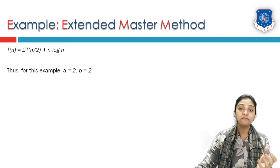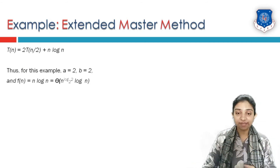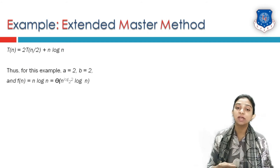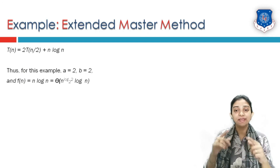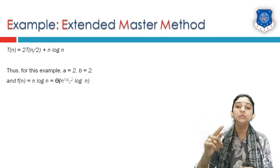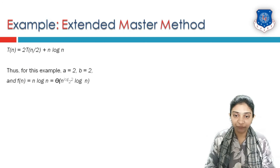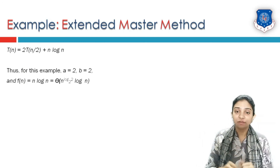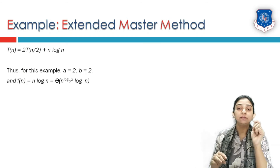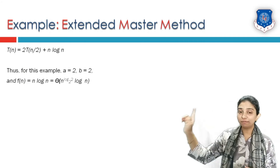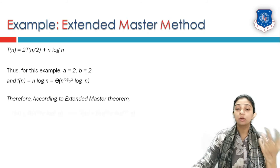For T(n) = 2T(n/2) + n·log(n) with a = 2, b = 2: we compute log_b(a) = log_2(2) = 1. So f(n) = n·log(n) = n^1 · log^1(n) = n^(log_2(2)) · log^1(n). The power of n in f(n) matches log_b(a) = 1, confirming this is Case 1 of the extended master theorem with k = 1.